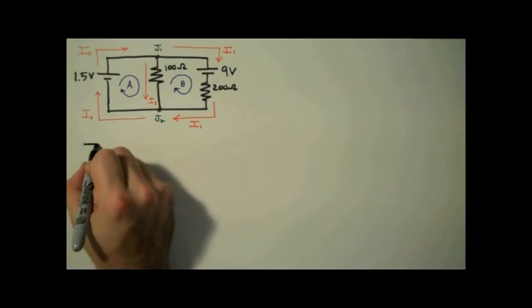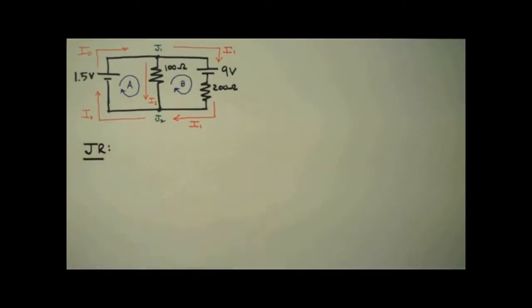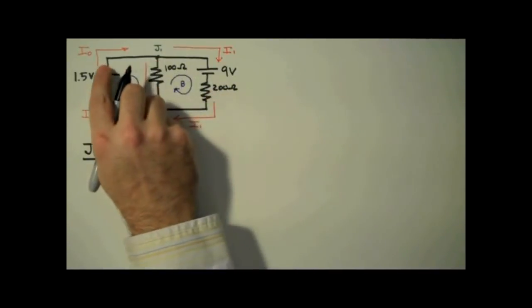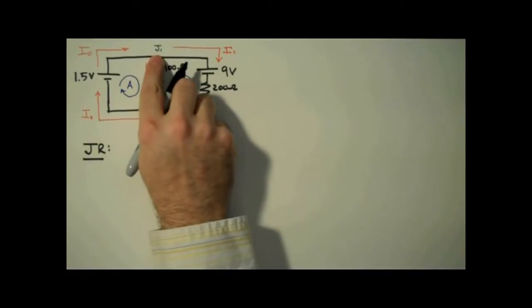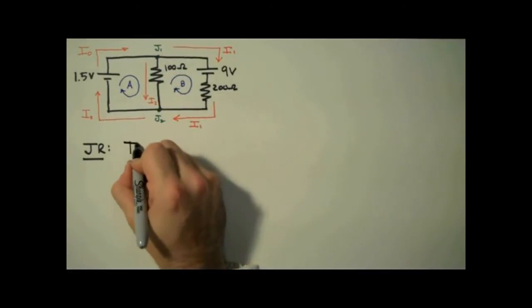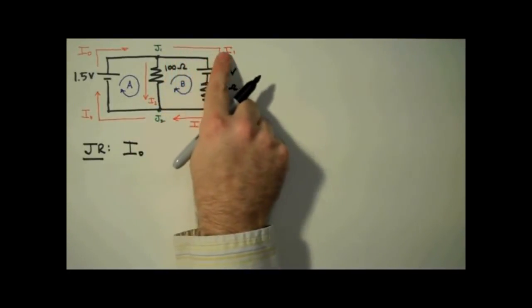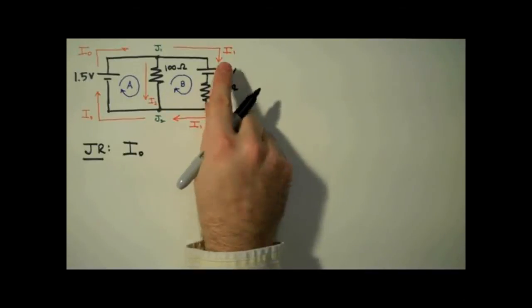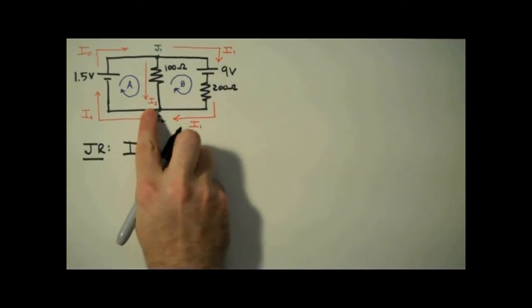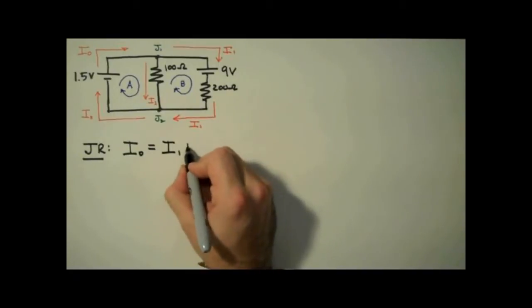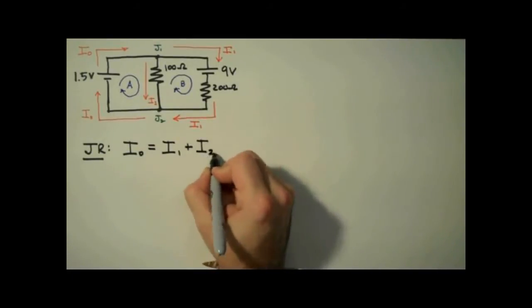Now that we've labeled our circuit, we're going to apply the junction rule. The junction rule states that the sum of the currents into a junction is equal to the sum of the currents out of a junction. So we're going to apply this to junction 1. The current in is just I0, so on the left-hand side of the equation I write I0. The currents coming out are I1 and I2, so on the right side we'll have I1 plus I2. This junction rule, by the way, is just a consequence of the conservation of charge.